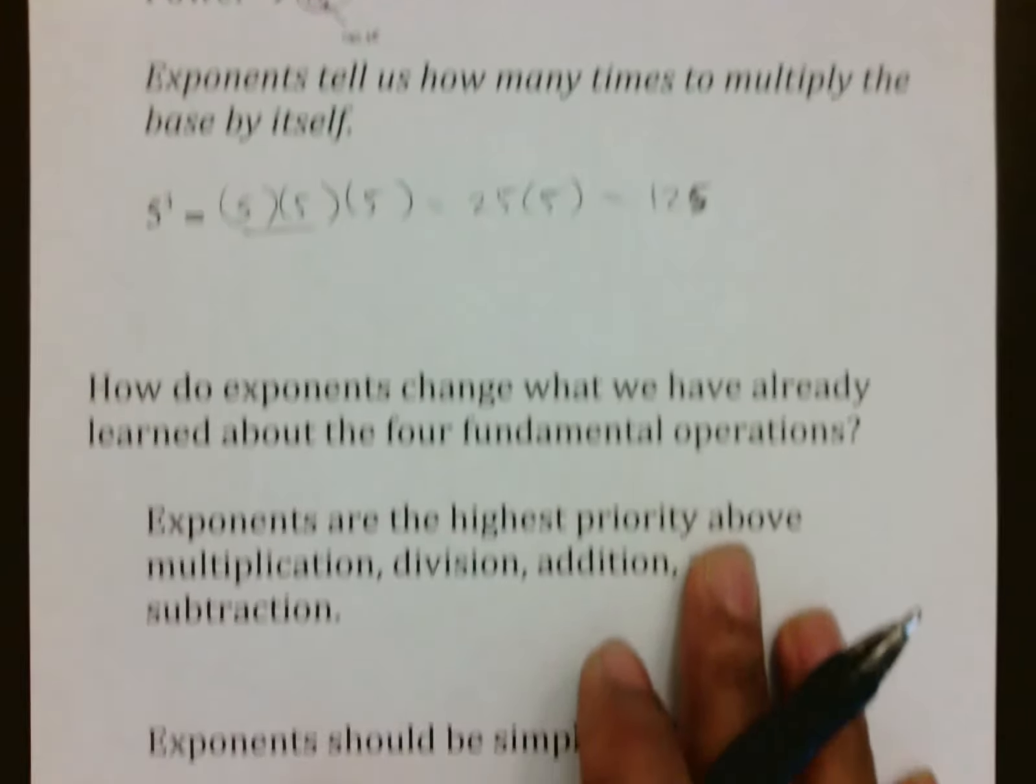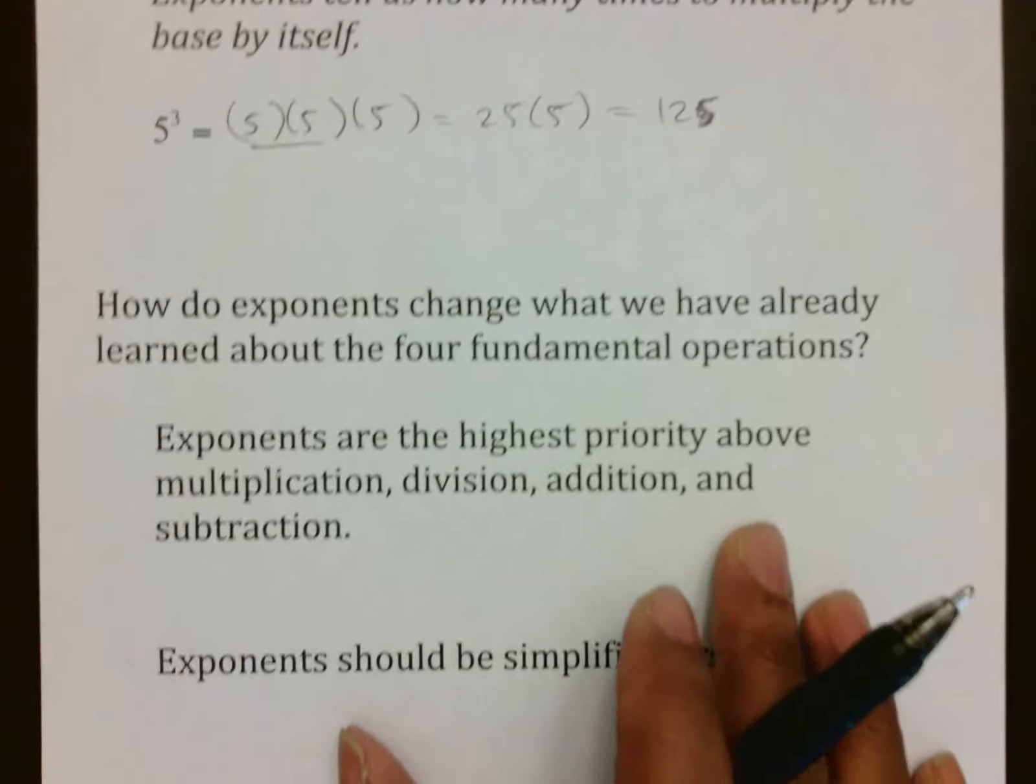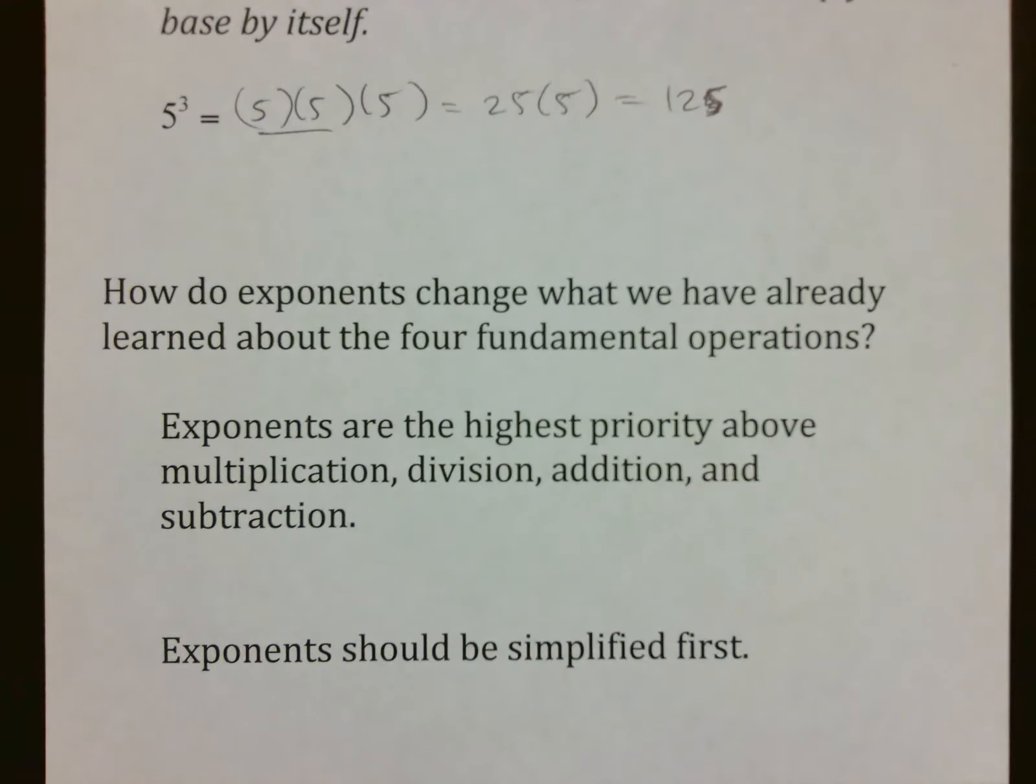So how do exponents change what we've already learned about the four fundamental operations? What you need to understand is that remember we talked about addition-subtraction being level one, multiplication being level two. Exponents are level three. They are the highest priority above all the other operations that you see, and so they should be simplified first before you do anything else.